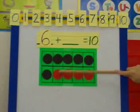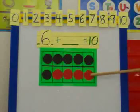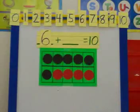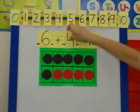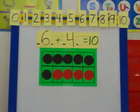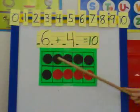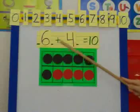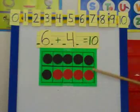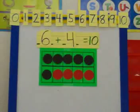1, 2, 3, 4. So I have my 4 that were missing. 1, 2, 3, 4. And I'm going to put that missing number right in there. 6 black dots plus 4 red dots equals a total of 10.